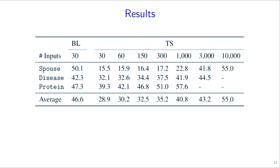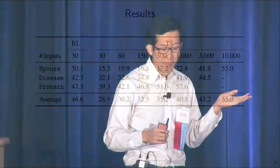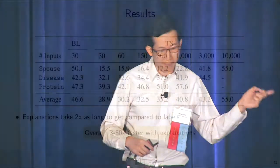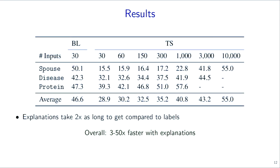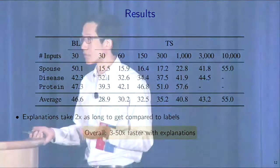The leftmost column is our approach, where we ask people to give 30 explanations. We use the procedure to convert those explanations into labeling functions, label a large unlabeled corpus, and train a model. From 30 explanations for spouse, we're already at the level of traditional labeling with many more examples. Empirically, explanations take only twice as long to collect as traditional labels, because most of the time is spent reading and understanding, not clicking yes or no. Overall, we found between 3 and 50 times efficiency gain by using explanations.